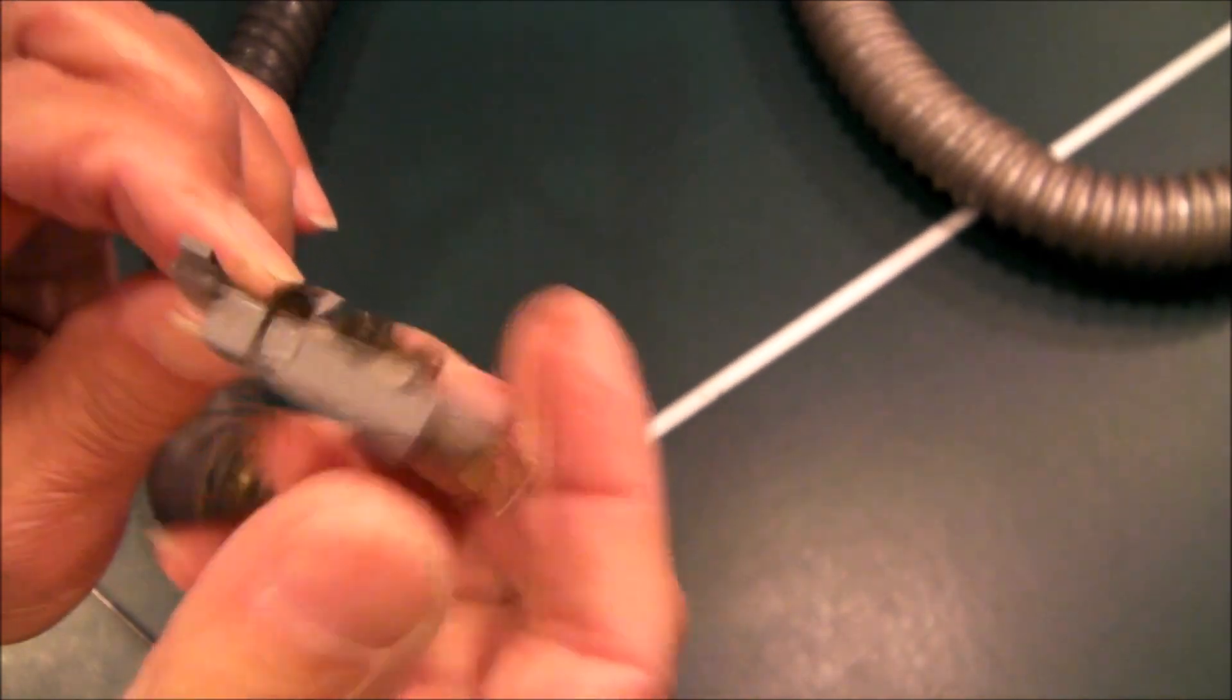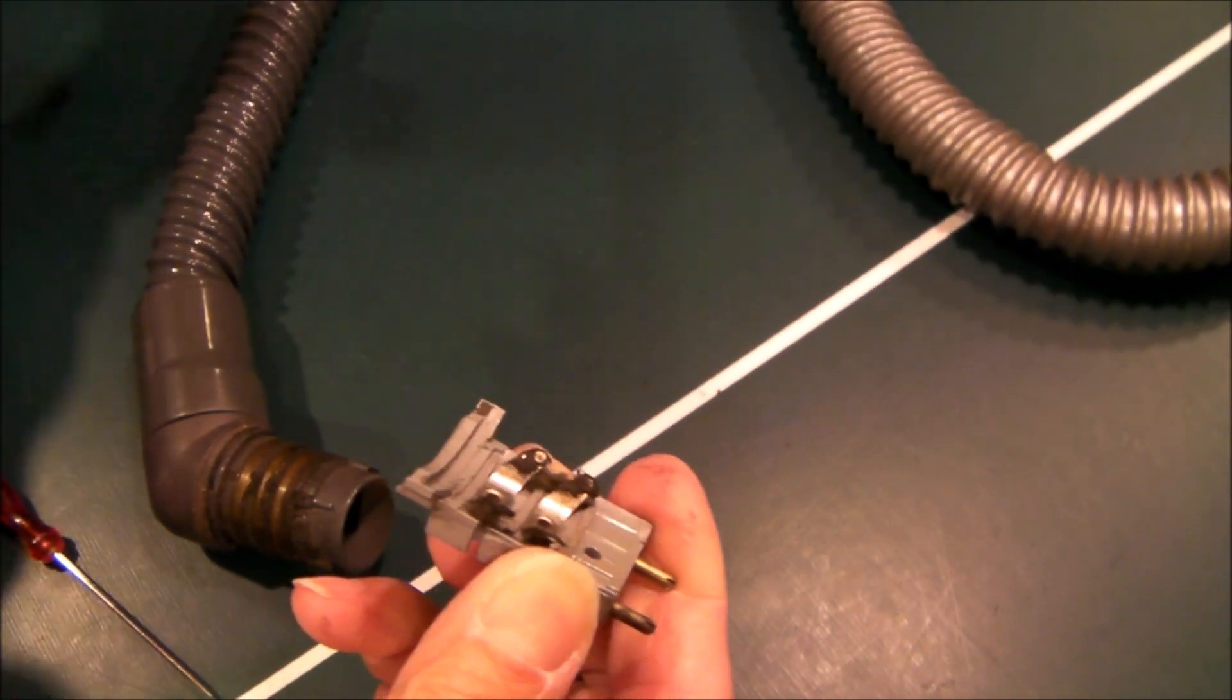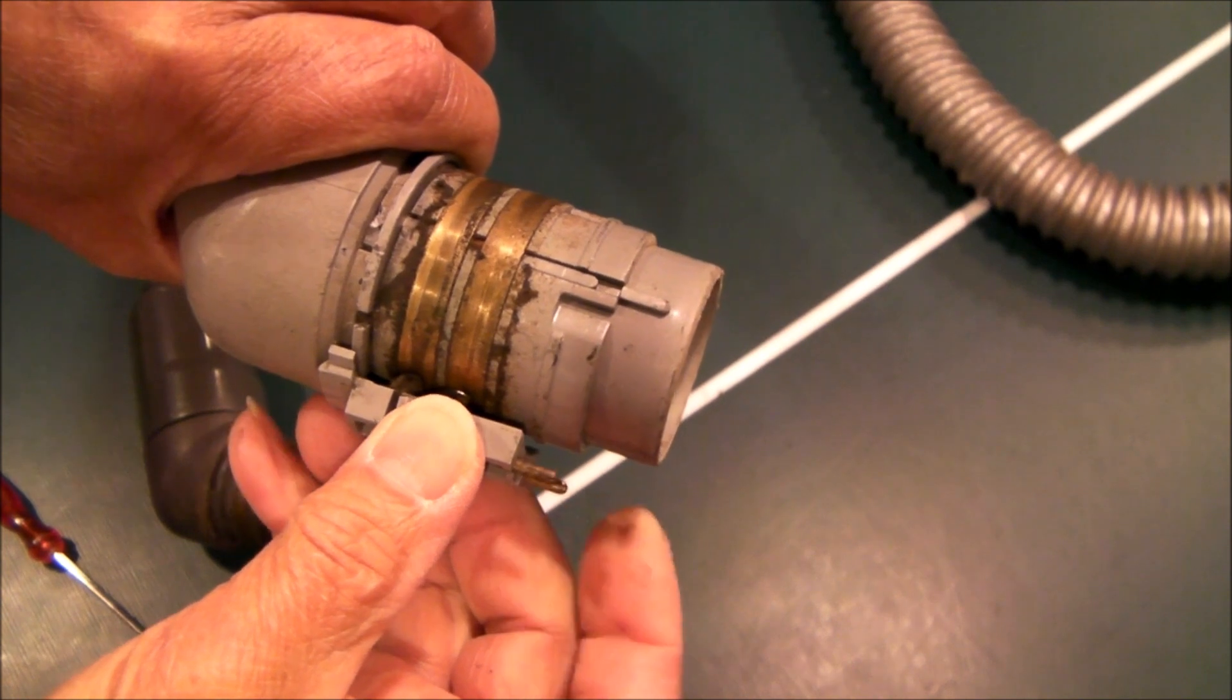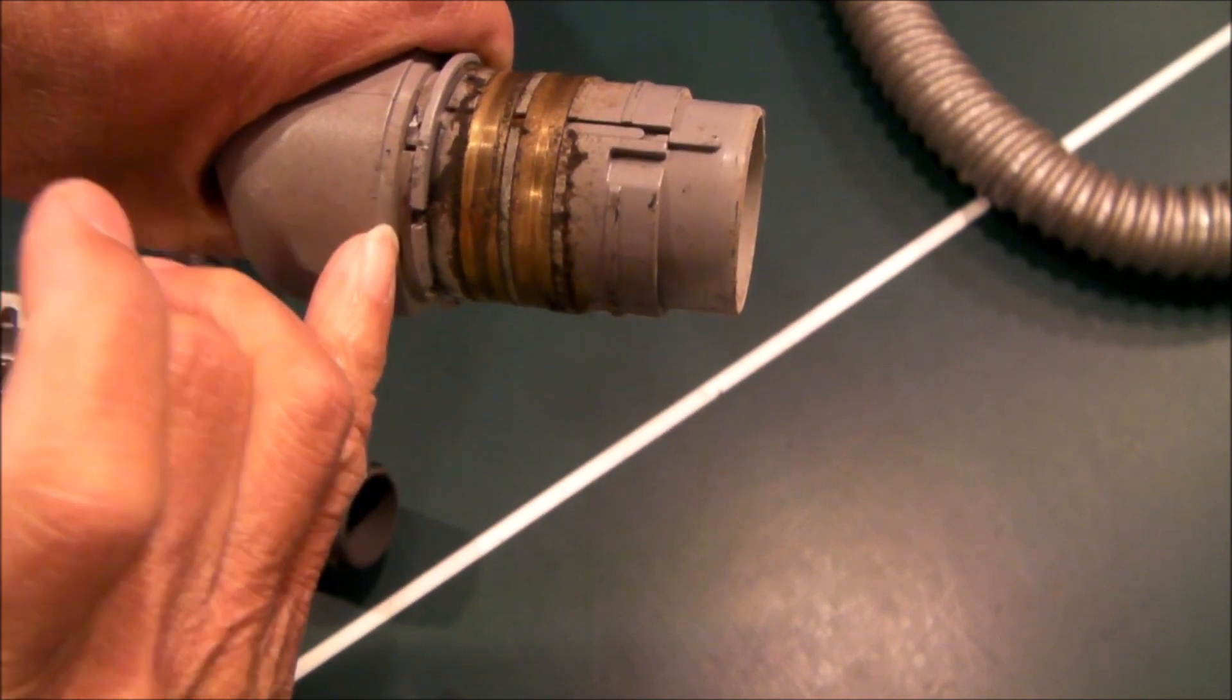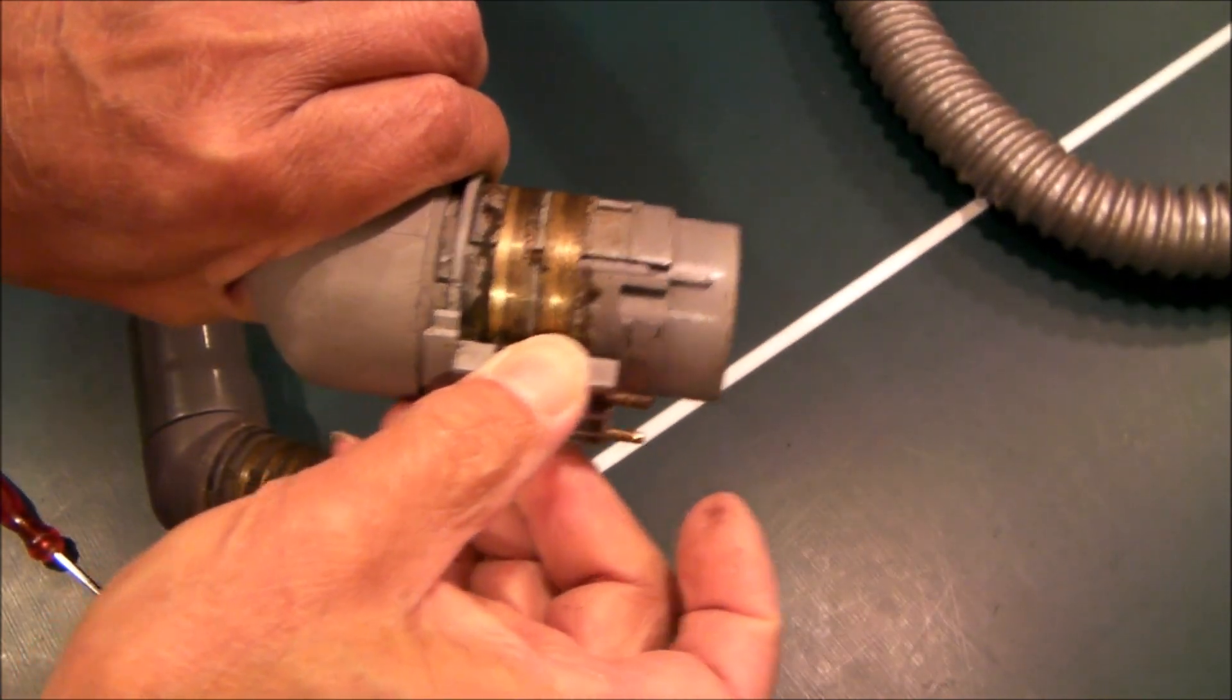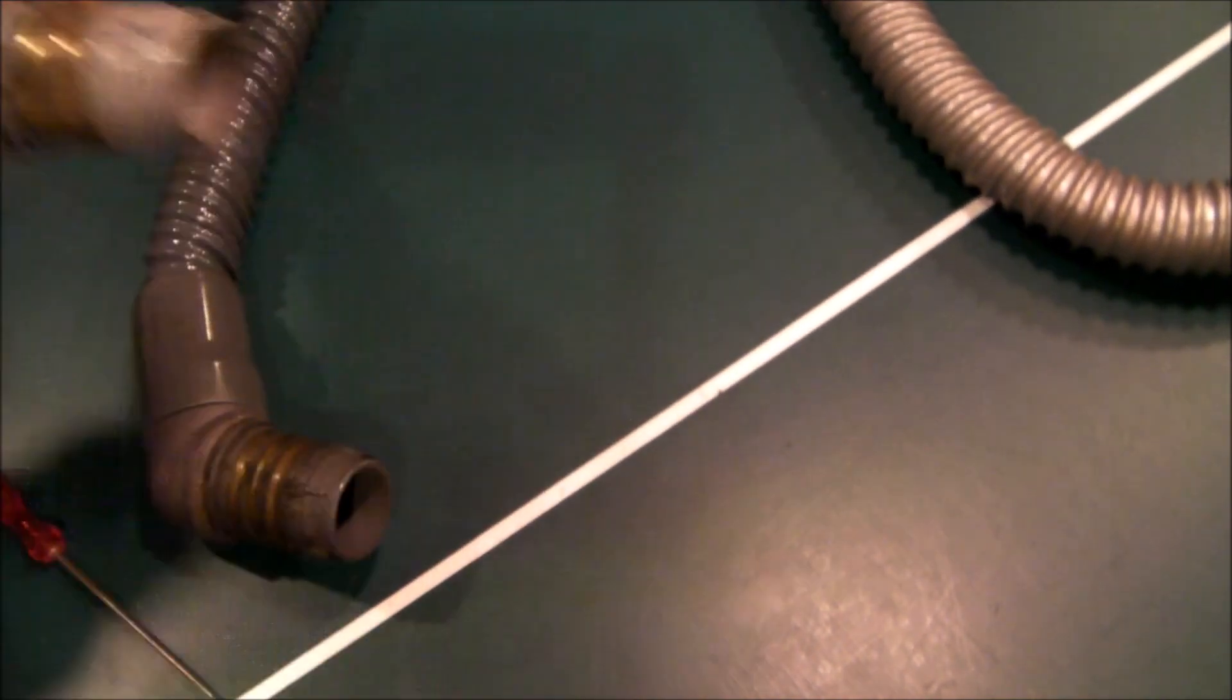It is this ridge right here that is holding the hose in place. That ridge rides along inside this groove right here. So when you pry it apart, that locking mechanism, when this slides out, that locking mechanism is no longer engaged in this groove.